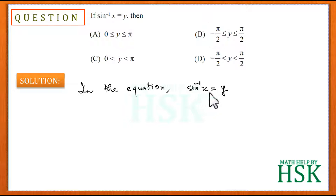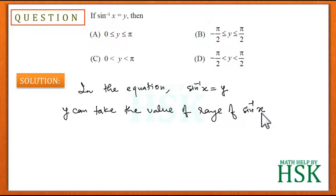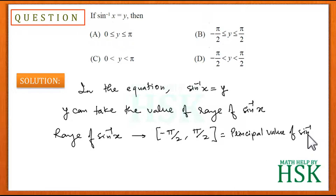To solve this question, we take the equation sin⁻¹(x) = y. This equation suggests that y can take only those values which belong to the range of sin⁻¹(x). The range of sin⁻¹(x) is the closed interval [-π/2, π/2], also known as the principal value branch of sin⁻¹(x).